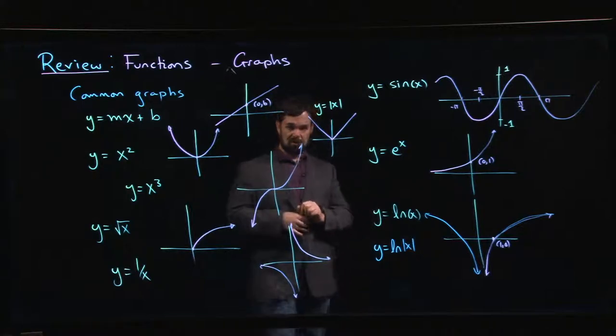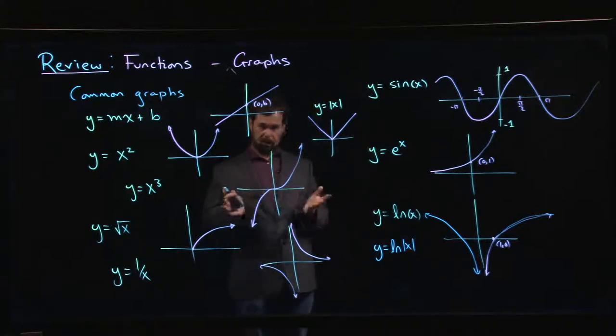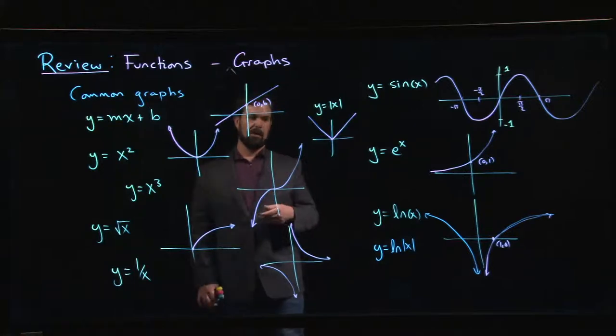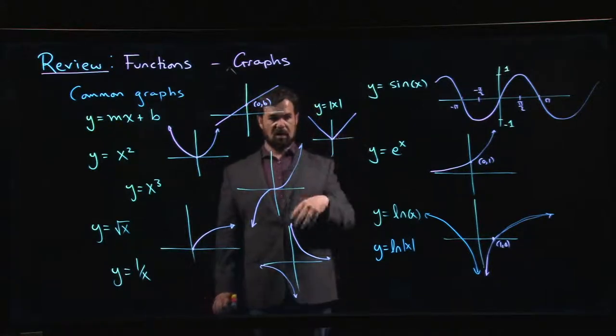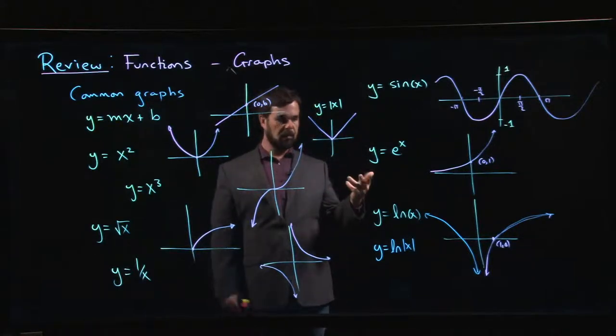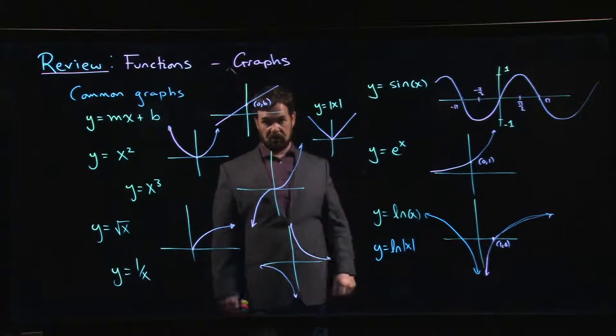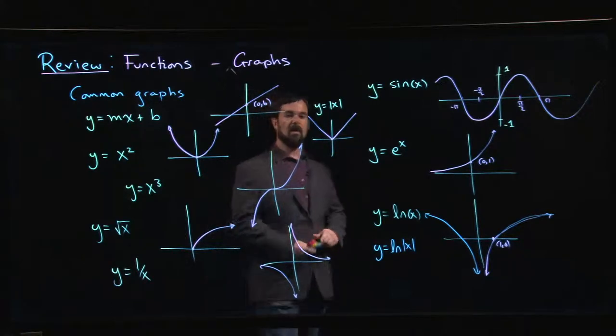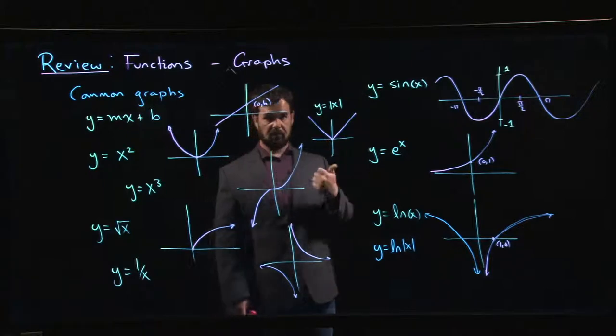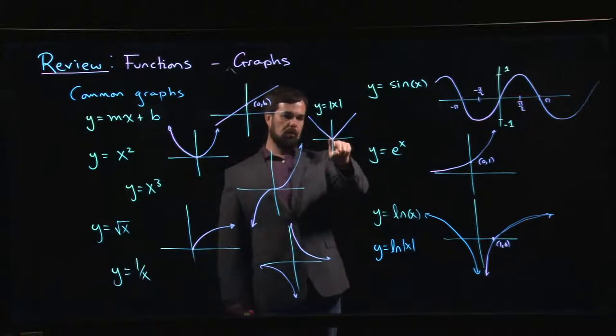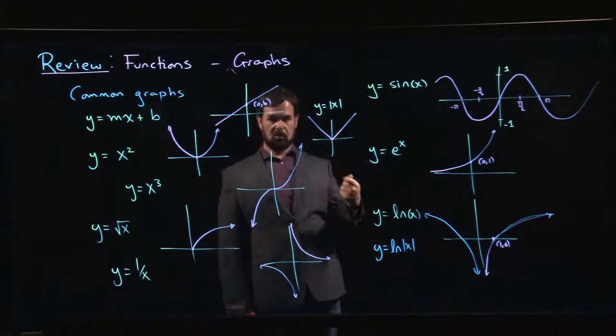The absolute value is interesting. It's kind of the simplest example that most people come up with for a function which is continuous at every point, once we define what it means for a function to be continuous, but does have a point where it does not have a derivative. At the origin, there's no well-defined slope for that function because the slope abruptly changes from minus 1 to plus 1.